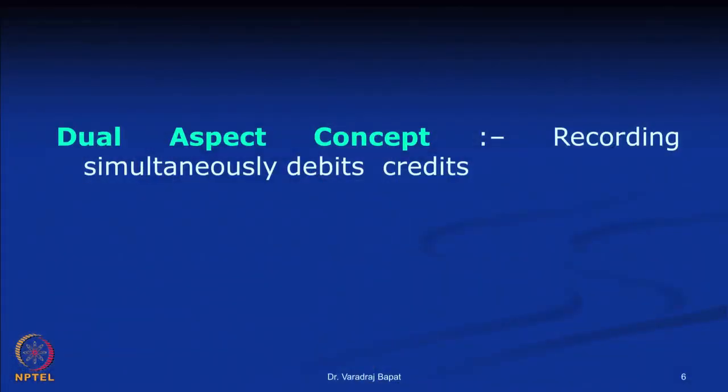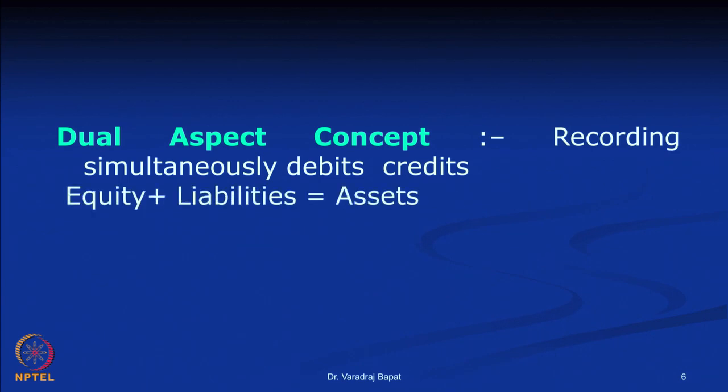Next is dual aspect. We know that for every transaction there are two effects — sometimes called debit or credit. Because of these two effects, the balance sheet always tallies. We have already seen the balance sheet equation: equities plus liabilities equals assets.